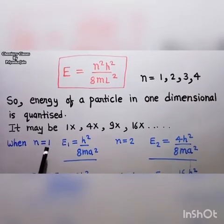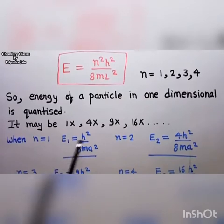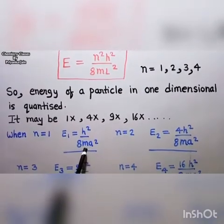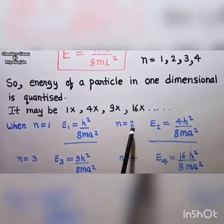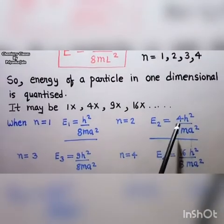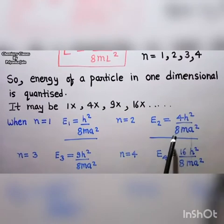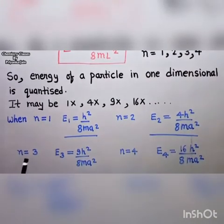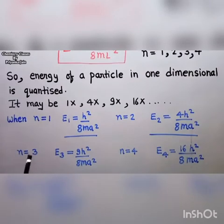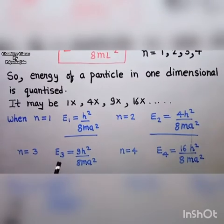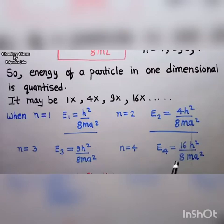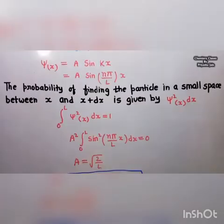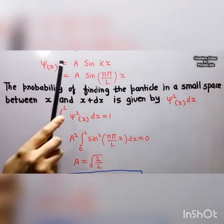For example, when n equal to 1, the ground state energy is E₁ equal to h squared divided by 8 m l squared. When n equal to 2, E₂ equal to 4 h squared divided by 8 m l squared. When n equal to 3, E₃ equal to 9 h squared divided by 8 m l squared. When n equal to 4, E₄ equal to 16 h squared divided by 8 m l squared.